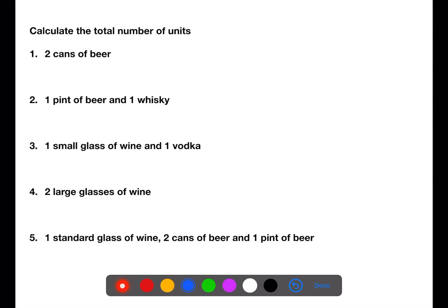In this first example we have two cans of beer and each can is worth 2 units. That means we have a total of 4 units. In the second example we have one pint of beer which is worth 3 units and one whisky which is 1 unit, giving a total of 4 units.